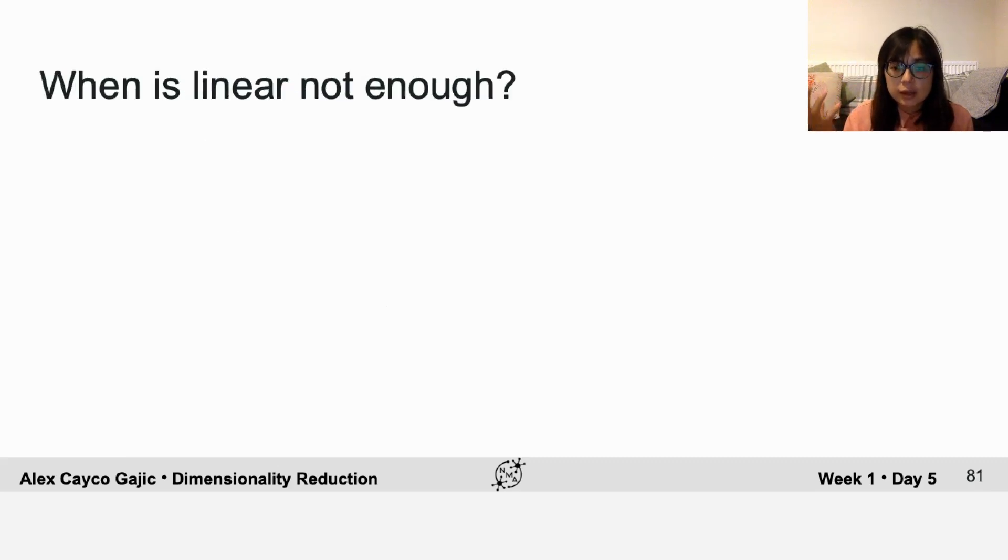When are linear methods not enough? Here's an example of a data set that is clearly one-dimensional, but that dimension is curved. So if you run PCA, you will not find that S-shaped curve because it's explicitly looking for a linear representation.